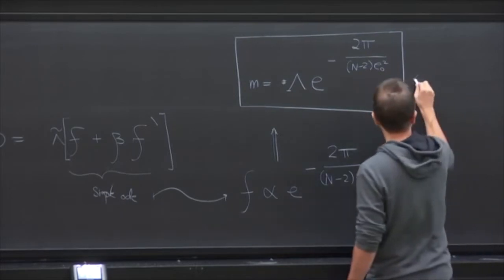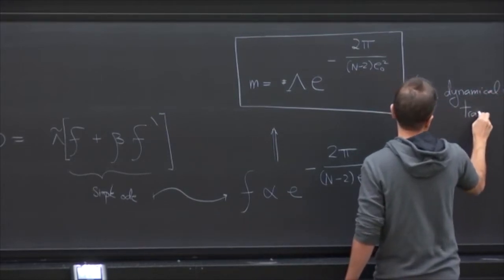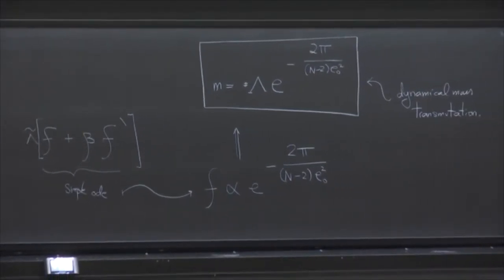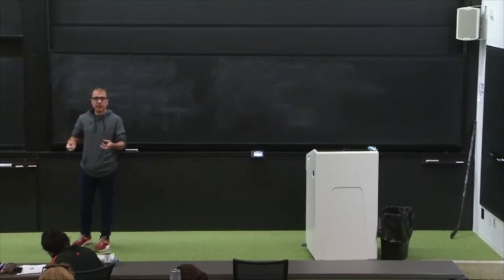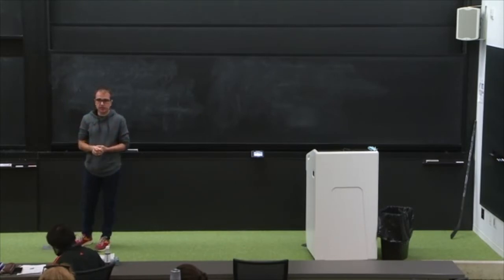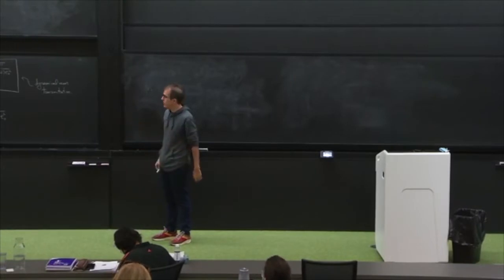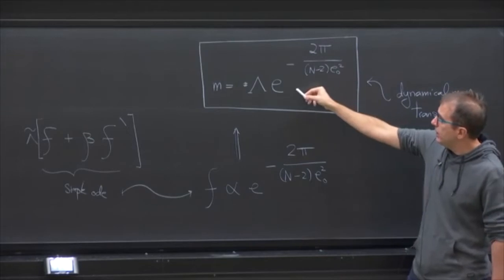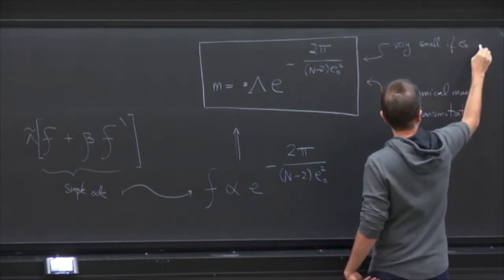Therefore if such a mass exists, it must be approximately m ~ Λ · exp(−2π/((N−2)E0²)). Starting with a dimensionless coupling and generating a mass this way is called dynamical mass transmutation. As noted in the last lecture, this is essentially the same phenomenon as in pure Yang-Mills theory, where one starts with a dimensionless coupling and quantum-mechanically generates massive glueballs non-perturbatively.